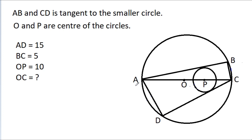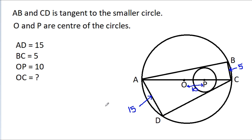In this video, we have given that AB and CD are tangent to the smaller circle, and O and P are centres of the circles. AD is 15, BC is 5, and OP is 10. Then we have to find OC.